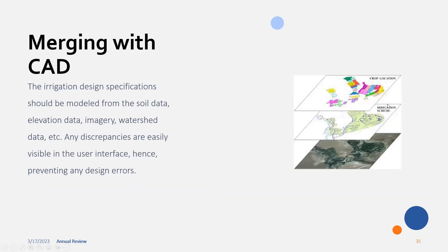Here's a good example: if you're in agriculture — or landscaping — you have all your data and your irrigation scheme overlaid on a nice base map, with each dataset in individual layers. Any discrepancies are easily visible in the user interface, presenting any design errors you may catch before construction begins. Design specifications such as soil data, elevation data, and watershed data are all important and can be visualized together in this way.